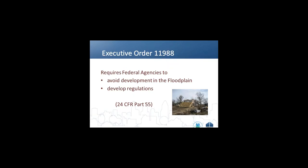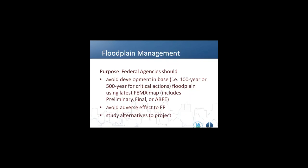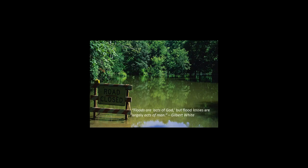Executive Order 11988 was issued by President Carter in 1977. Its main thrust was to require federal agencies to avoid development in the floodplain and to develop regulations. The purposes were to avoid development in the base floodplain — or the 500-year floodplain for critical actions — and to avoid adverse effects or impacts of the floodplain.